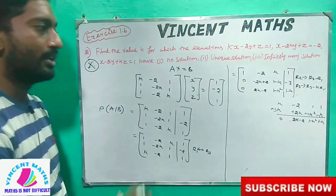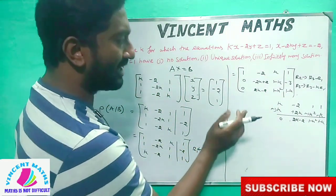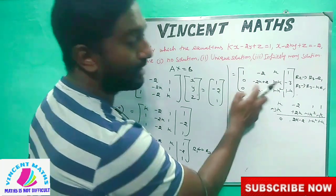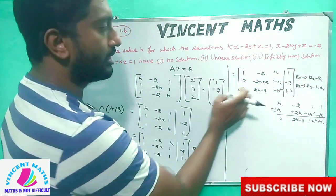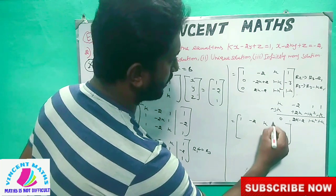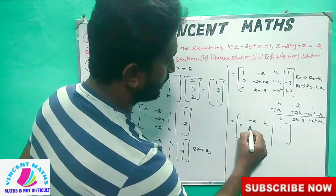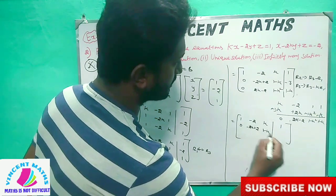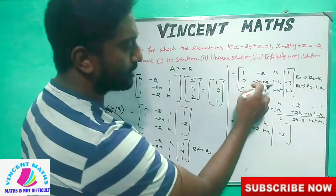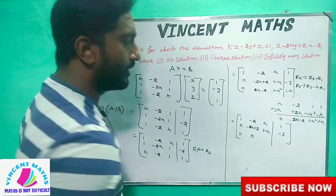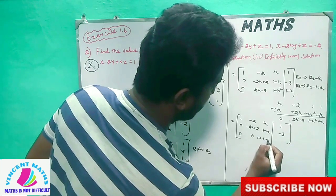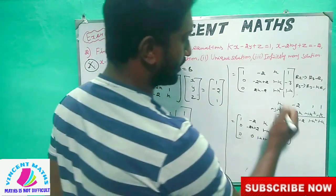1 minus k. This is the value. Now it is very easy to get zero. Here is minus and plus 2, here is plus 2, here is minus 2. What do we do in this place? R1 and R2: 1, minus 2, k, 1, 0. Minus 2k plus 2, 1 minus k, minus 3. We add these.